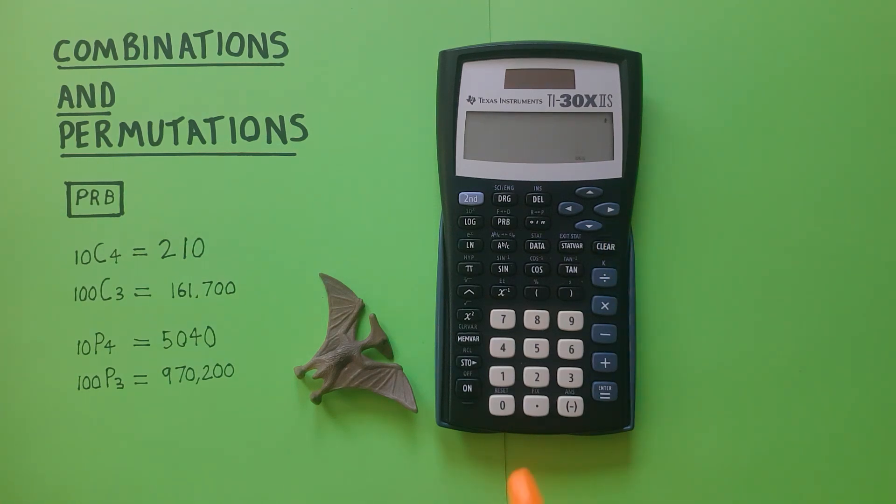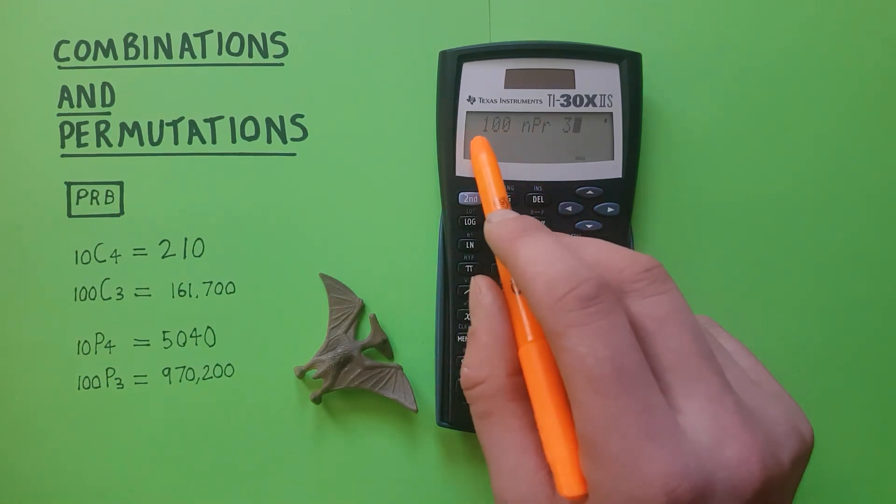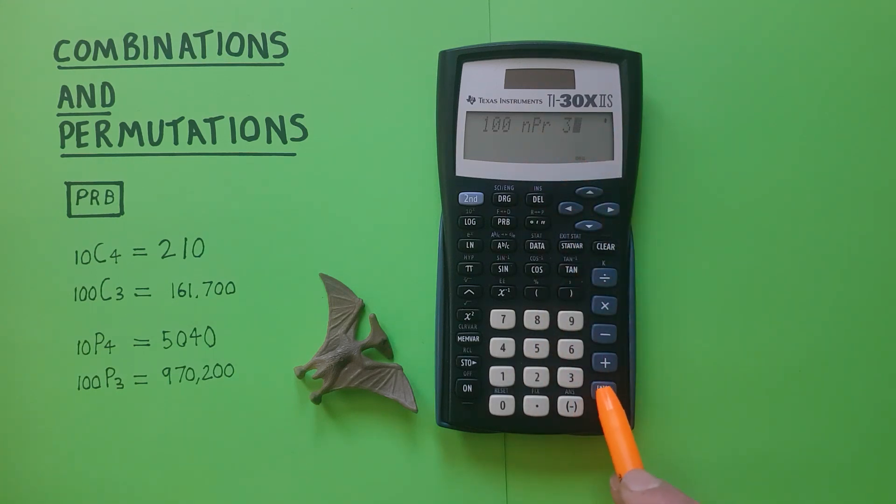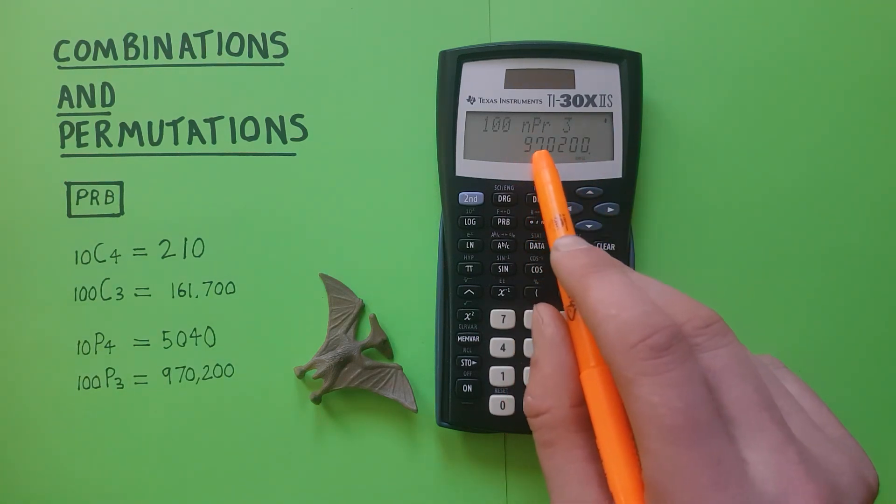Another example, let's say choosing 3 from a set of 100 when the order does matter. So 100 PRB NPR 3 equals 970,200.